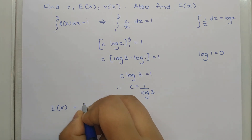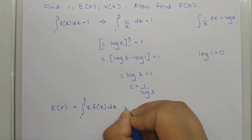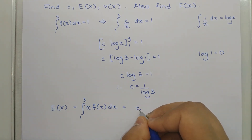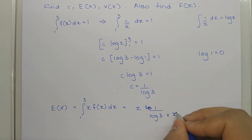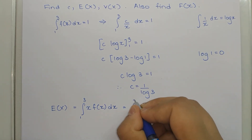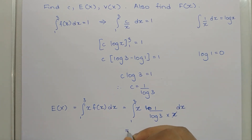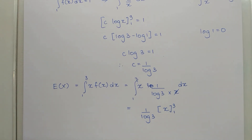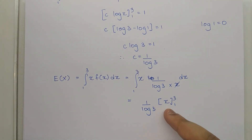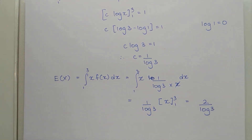Now finding E(X): E(X) = integral from 1 to 3 of x·f(x) dx = integral from 1 to 3 of x·(1/log 3)·(1/x) dx. The x terms cancel, leaving integral from 1 to 3 of 1/log 3 dx = (1/log 3)·x from 1 to 3 = 2/log 3.